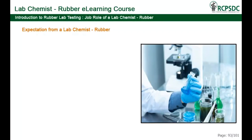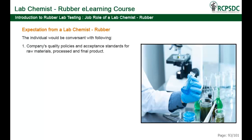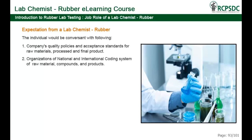Expectations from a lab chemist in rubber: the individual should be conversant with the company's quality policies and acceptance standards for raw materials, processed and final products. They should also know the organization's national and international coding system for raw materials, compounds, and products, as well as chemicals used in the industry and their function including MSDS.